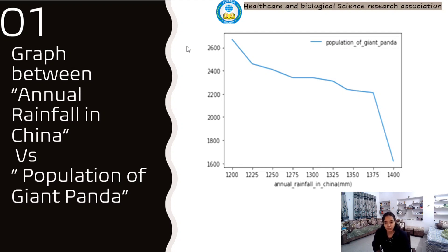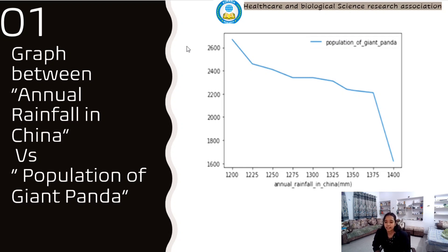Acute gastroenteritis occurs when food and water contaminated with pathogenic microorganisms or their toxins are consumed, and chronic gastroenteritis occurs when your stomach lining becomes inflamed. Colds, most likely with a runny and stuffy nose, generally occur in rainy seasons. Pneumonia is an infection that inflames the lungs; air sacs may be filled with fluid and pus. Due to all these factors, the population of Giant Pandas decreases with an increase in rainfall.